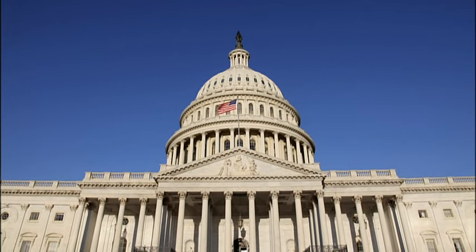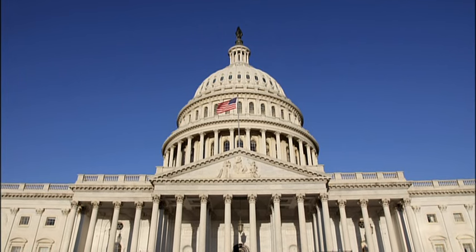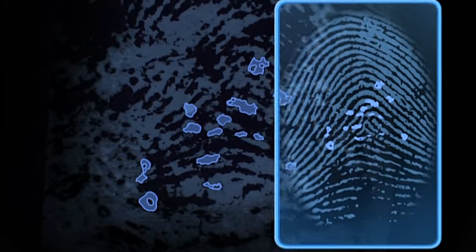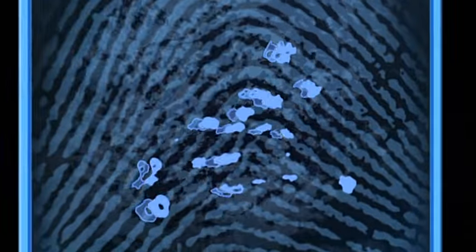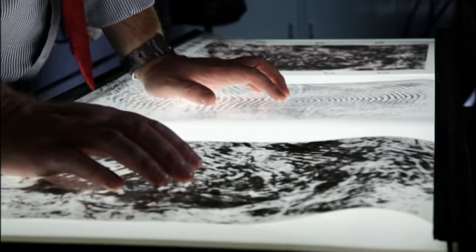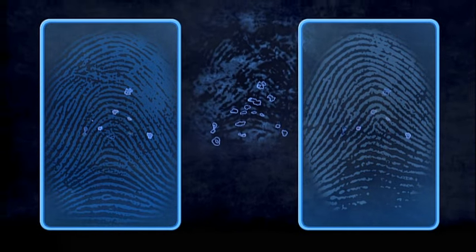Now, the question on everyone's mind is, how could this misidentification happen? It's a question that will eventually make its way to the United States Congress. The similarity between Mayfield's print and the bomber's is undeniable. It challenges a century-old pillar of forensic science, that no two prints are identical. We always assume that fingerprints are very, very unique. But what the Mayfield case demonstrates is that parts of a fingerprint can be so similar it's possible for two people to be identified to one latent print.